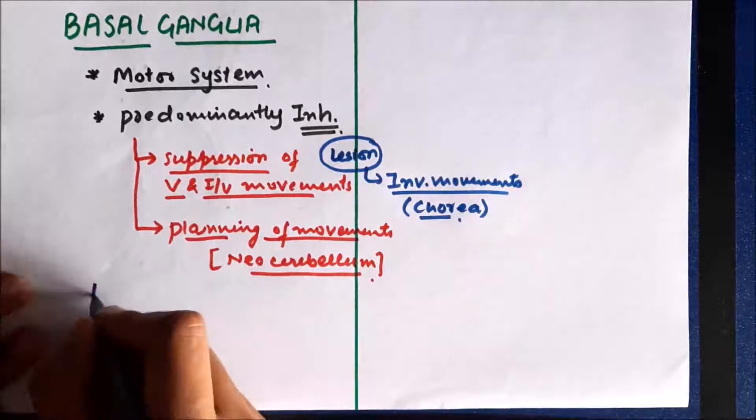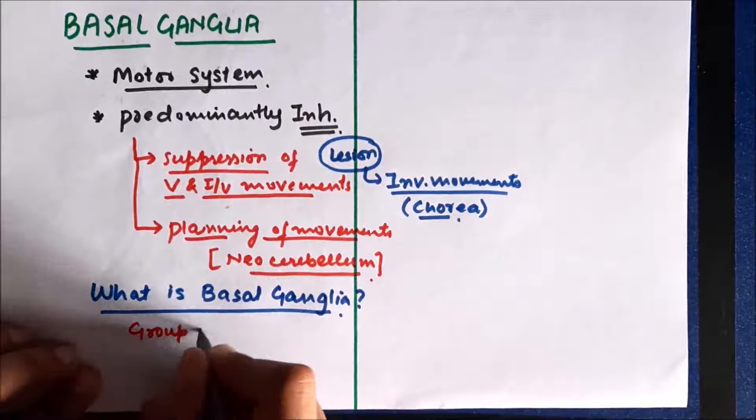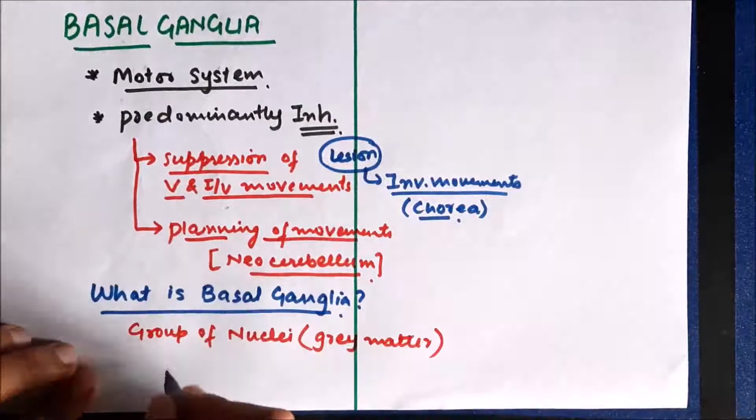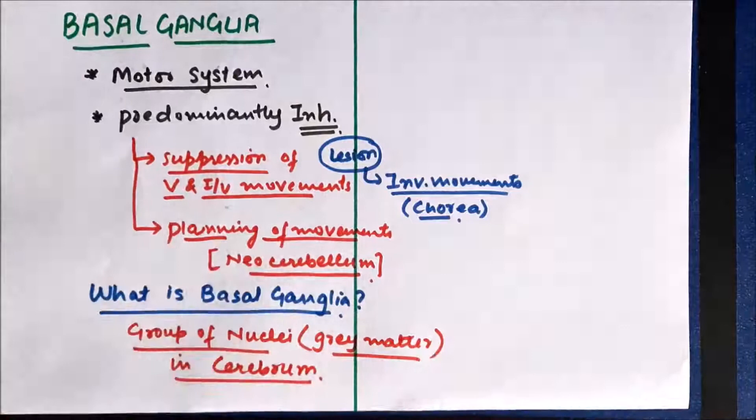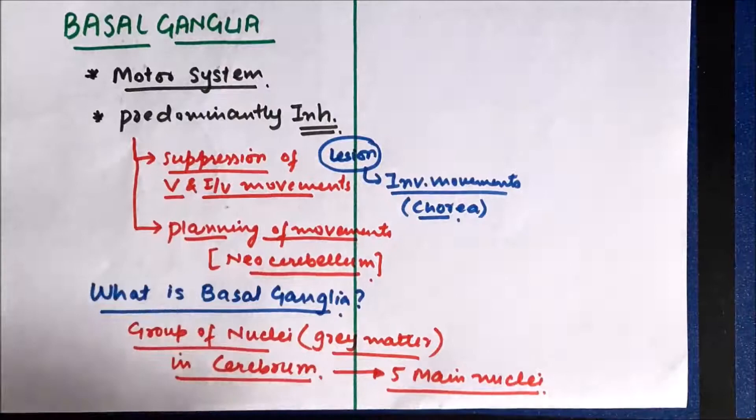The first basic question we should ask is: what are basal ganglia? Basal ganglia is a group of nuclei present in the cerebrum. When I use the term nuclei, it means basal ganglia is part of the gray matter of the brain and they are present in the cerebrum. Basal ganglia consists of five main nuclei. We'll first try to understand the anatomy — the structure and location of these nuclei.